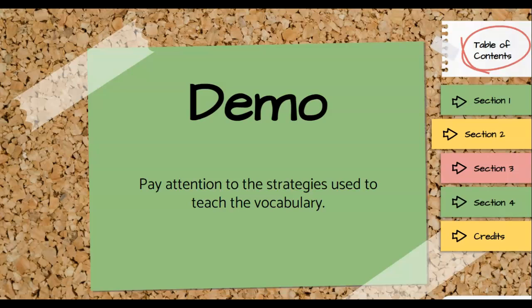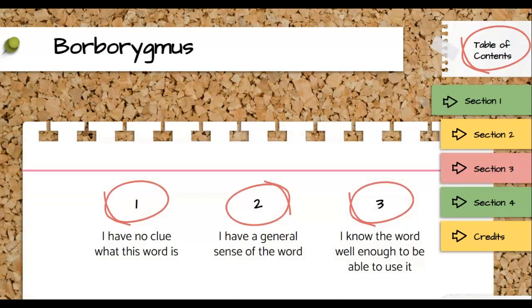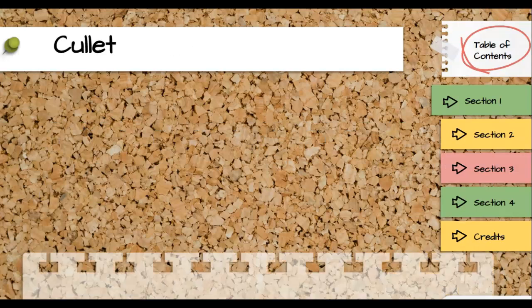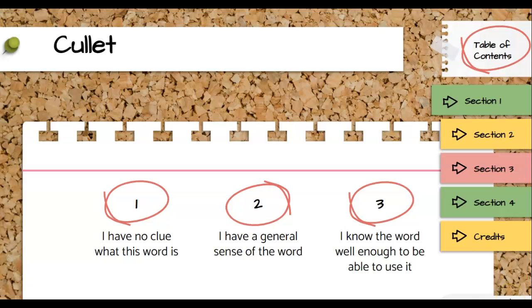To see where your word knowledge is first, let's do a self-assessment. Rate your knowledge on these words. One is I have no knowledge of this word whatsoever. Two is I've heard it and I kind of know what it is — I have a general sense of the word. And three, I know the word well and I can use it. First word: borborygmus. Do you have no clue what this word means, a general sense of the word, or I know the word well enough to use it? The next word is defenestrate.